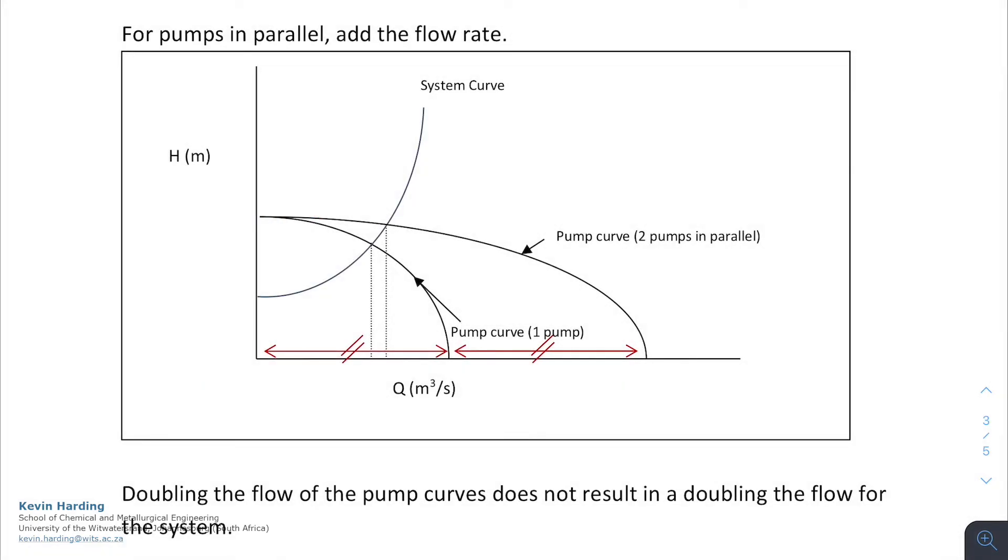And as we saw for the series, we need to add in the system curve, whatever that may be, and you'll notice that this is not going to double the flow rate, sorry, the head. It does increase the head by a certain amount, not quite doubling, but it is also going to have a slight effect on the head when we put the system curve onto it.